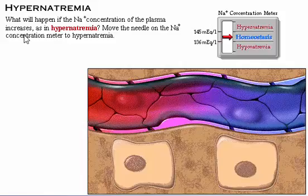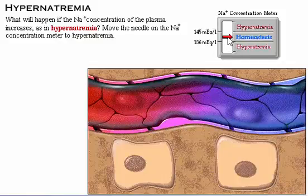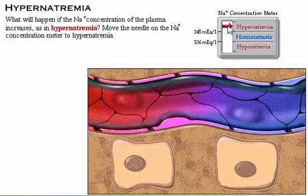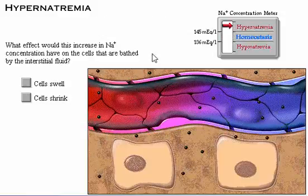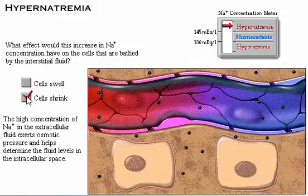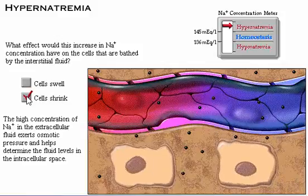Now let's consider what will happen if the sodium concentration of the plasma increases, as in hypernatremia. What effect would this increase in sodium concentration have on the cells that are bathed by the interstitial fluid? Yes, the high concentration of sodium in the extracellular fluid exerts osmotic pressure and helps determine the fluid levels in the intracellular space.